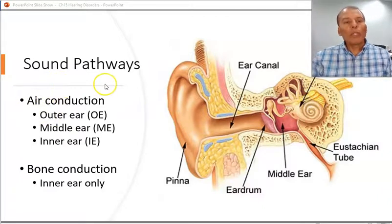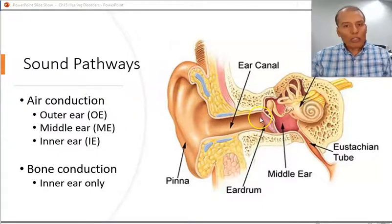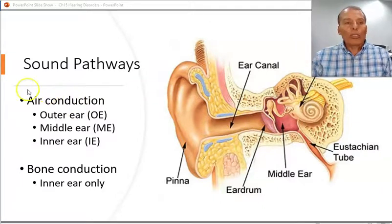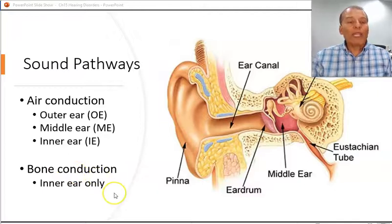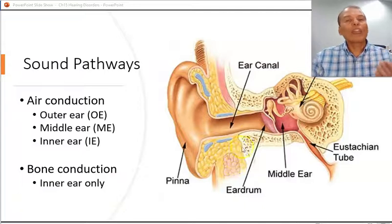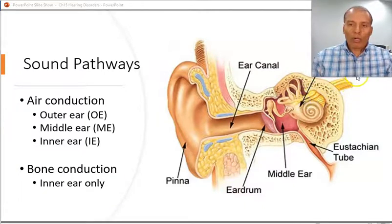When we evaluate hearing, we look at the functions of each level. We use air conduction testing and bone conduction testing, and we also look at testing for the central component of hearing at the level of the auditory nerve, the auditory pathways, and the upper brain structures.